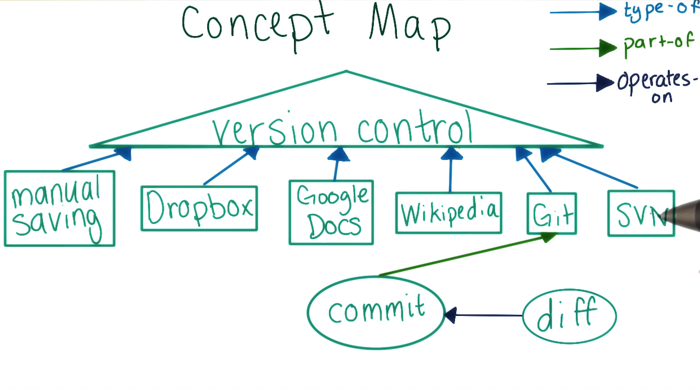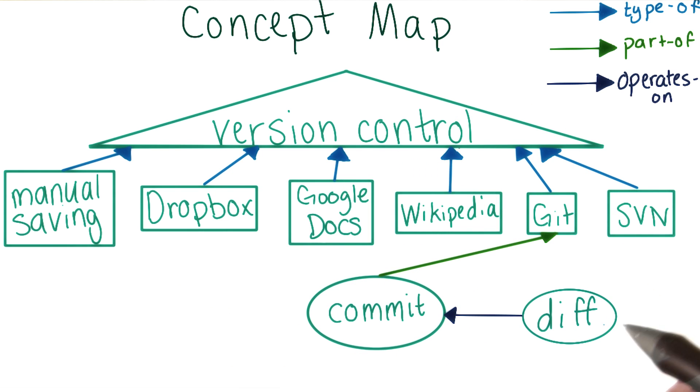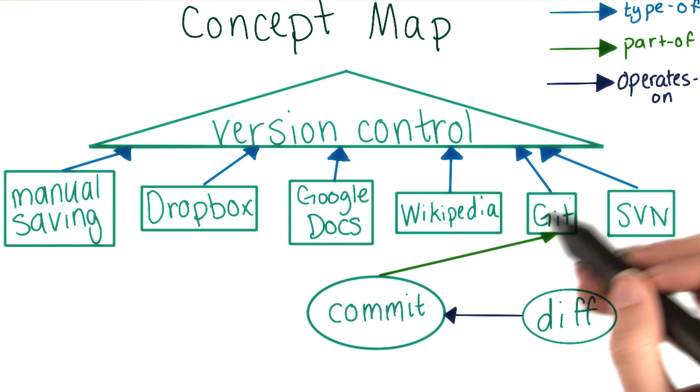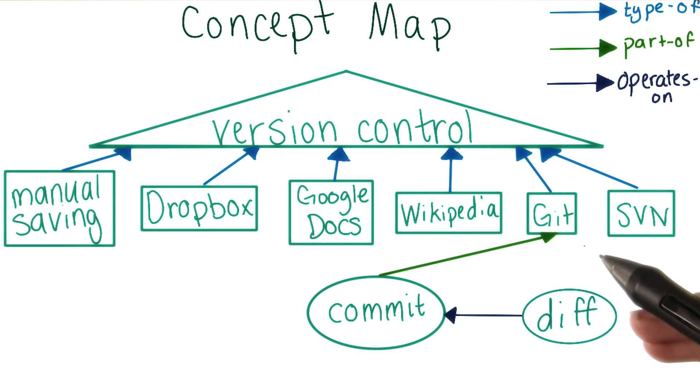It's been a while since we last updated our concept map, and we've discussed several new topics in the meantime. As a refresher, here's what the map looked like the last time we touched it. The map's getting pretty complicated at this point, and we're mostly just going to be talking about git. So let's go ahead and zoom in and just look at this part of the graph.